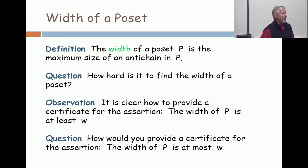Okay, so now we have the analogous concept for height, for anti-chains, that's width. The width of a poset is the maximum size of an anti-chain, and we ask how hard is it to find the width?